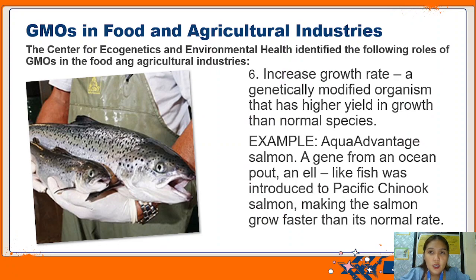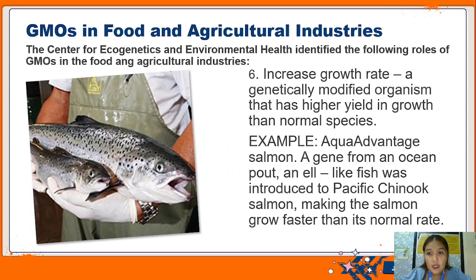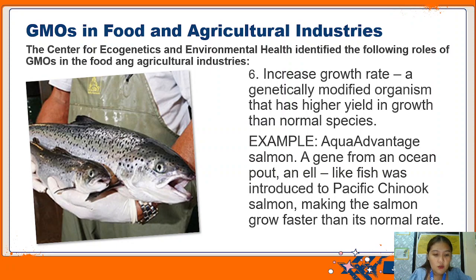The next role is increased growth rate: genetically modified organisms have a higher yield in growth than normal species. For example, the AquaAdvantage salmon - a gene from an ocean pout or eel-like fish was introduced to Pacific Chinook salmon, making the salmon grow faster than its normal rate. The normal-sized salmon was grown much larger and faster than the normal rate.